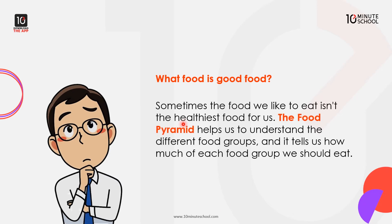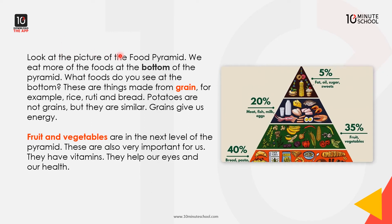What food is good food? Sometimes the food we like to eat isn't the healthiest food for us. The food pyramid helps us understand the different food groups and tells us how much of each food group we should eat. Look at the picture of the food pyramid. We eat more of the foods at the bottom of the pyramid. At the bottom are things made from grain — for example, rice, roti, and bread. Potatoes are not grains but they are similar. Grains give us energy.